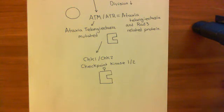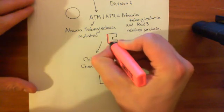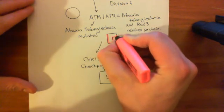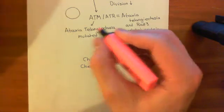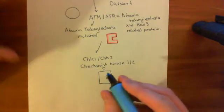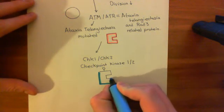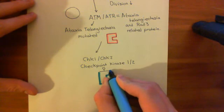They are kinase enzymes, and when they become activated, so I'll denote them in this red colour here, when they become activated they are going to add phosphate groups onto other kinase enzymes, which are the checkpoint kinase 1 enzyme and also the checkpoint kinase 2 enzyme.